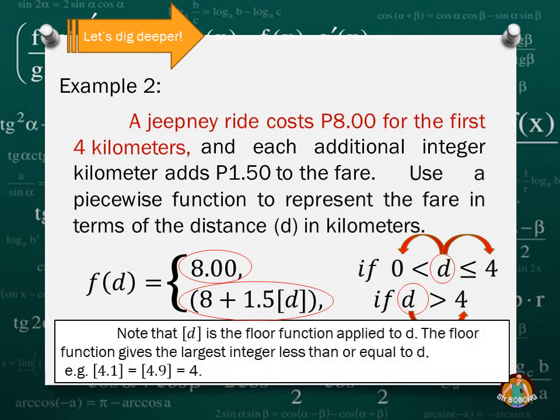When we say floor function, the floor function gives the largest integer less than or equal to D. For example, if your distance is 4.1, so if it's 4.1, only 0.1 is the excess, it's still considered as 4. Considered as 4 kilometers. If it's 4.9, it didn't reach 5, right? So if it's 4.9, it means it's still 4 kilometers. So you won't be charged 1.50. You have no additional charge because it's floor function. The opposite of floor function is the ceiling function. Floor function rounds down the decimal point. We round down. So 4.1 to 4.9, it's still at 4. So it doesn't round up. So that's it, an example of a piecewise function.